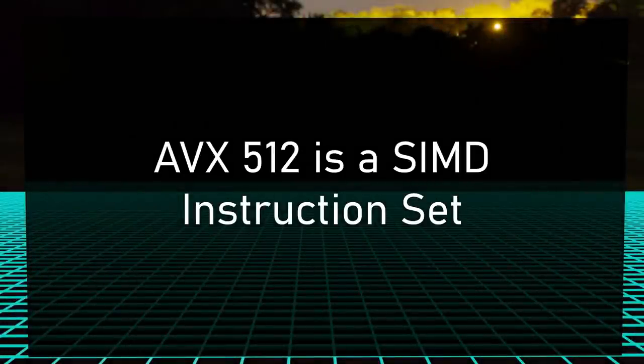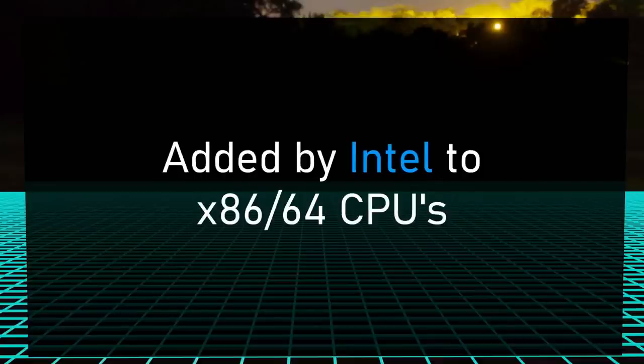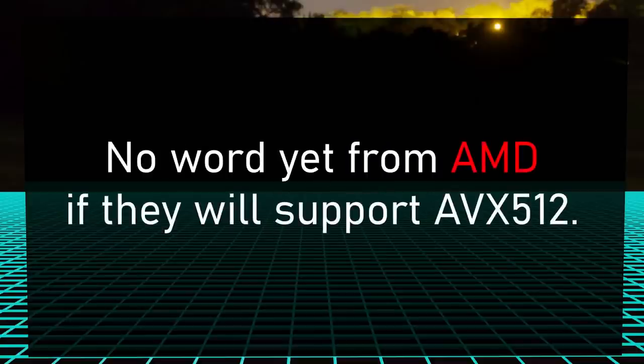AVX512 is a SIMD instruction set with 512-bit registers. It was added by Intel to the x86-64 CPUs. At the moment it's not supported by AMD, and as of October 2020, there's no word as to whether AMD will actually include AVX512. We're seeing something really interesting happen in the world of CPUs: AMD is going for lots and lots of cores in their Ryzen CPUs for parallelism, and Intel is going for a massive instruction set. Who's going to win? Who knows? What an interesting battle.